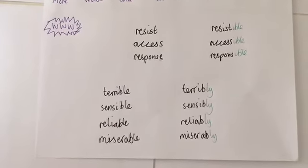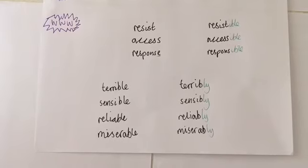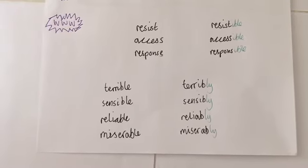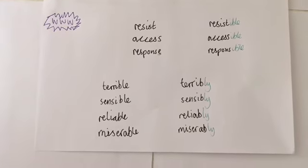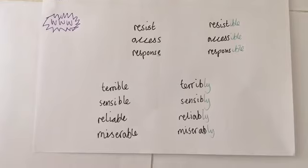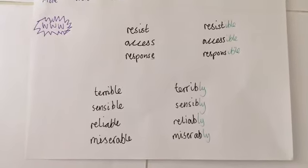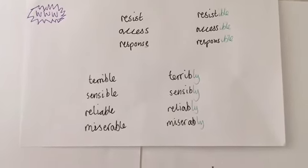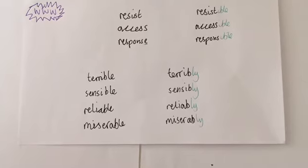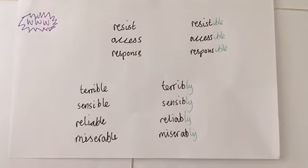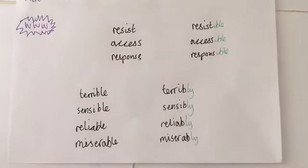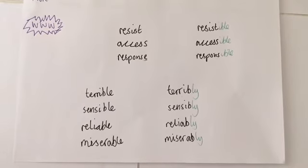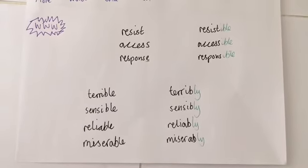We have some weird word warnings. 'Resist', 'access', and 'response' become 'resistible', 'accessible', and 'responsible'. Those do have an obvious root word, so you'd anticipate -able, but in these cases they are not — they use -ible.